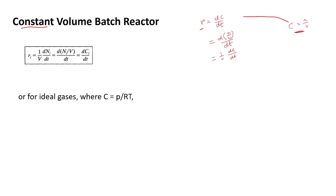So if we substitute the expression for c in this rate expression, we get d(n/v)/dt. Since we are dealing with constant volume, 1/v can be taken out, and the rate expression becomes r = (1/v) · dc/dt.